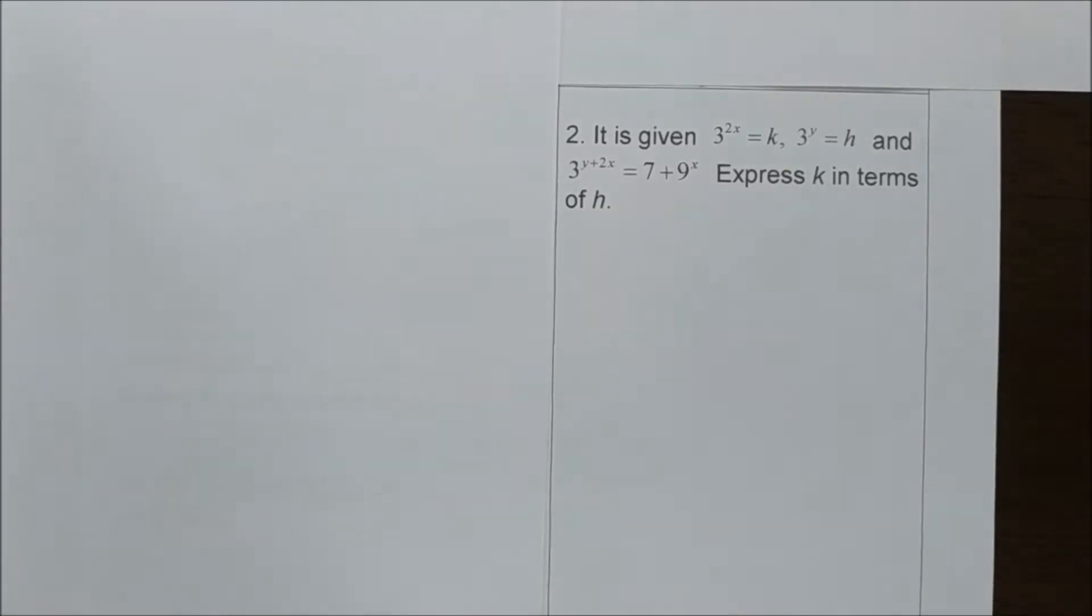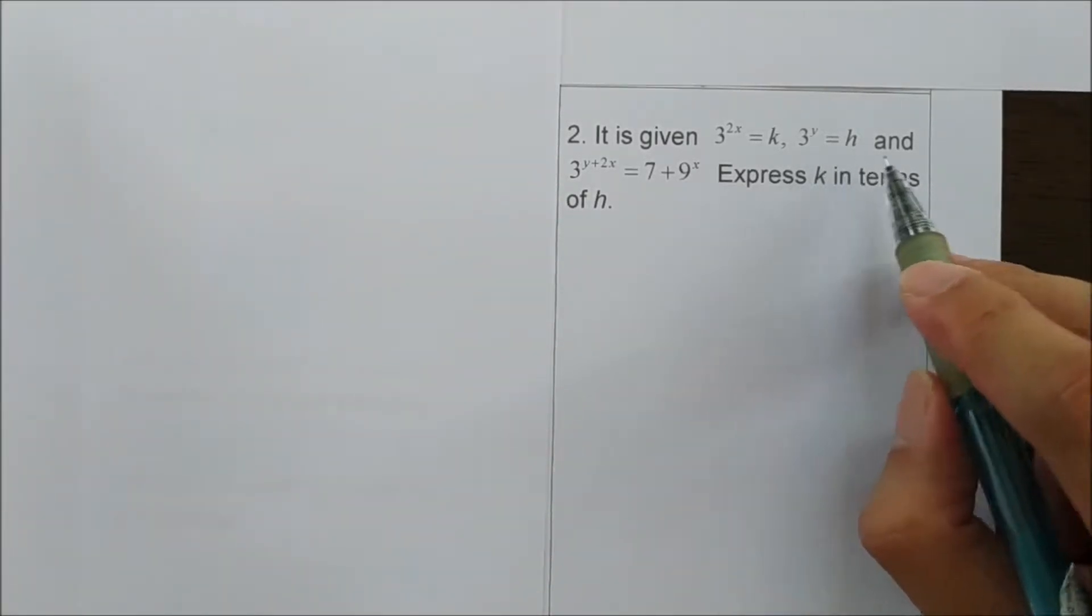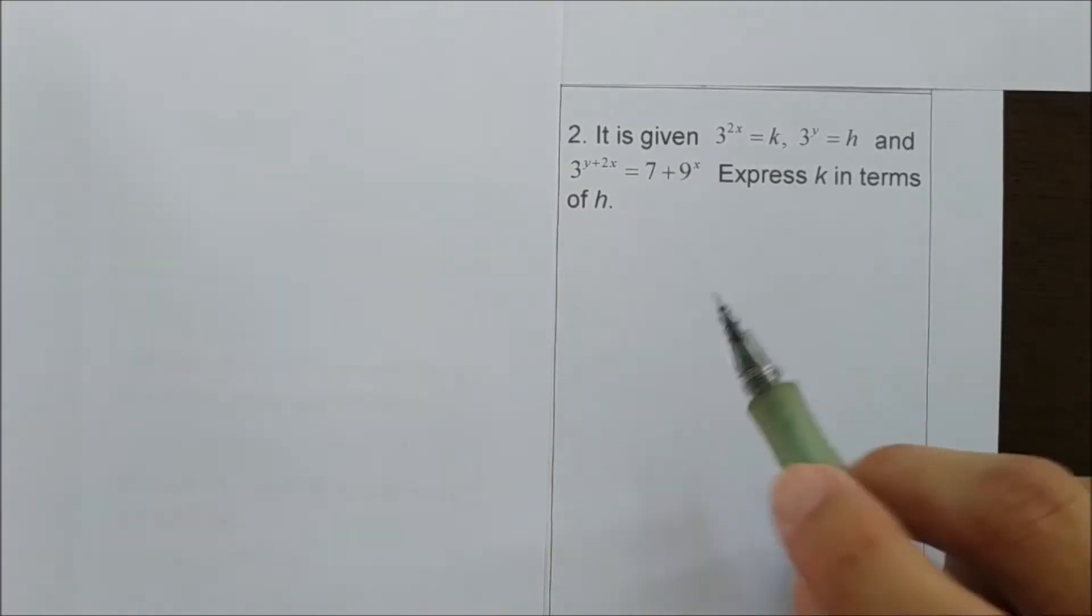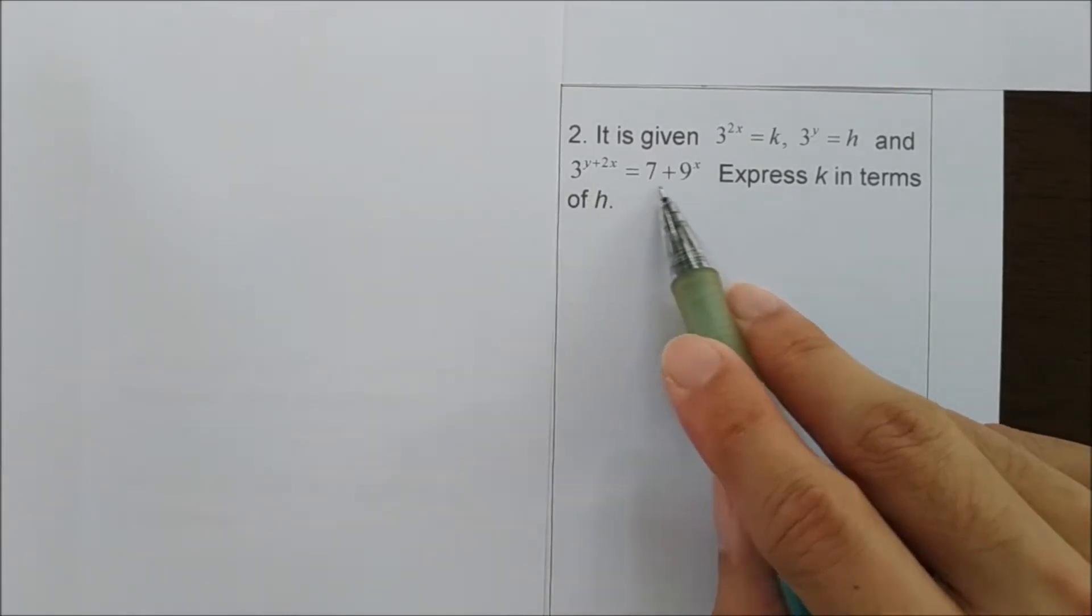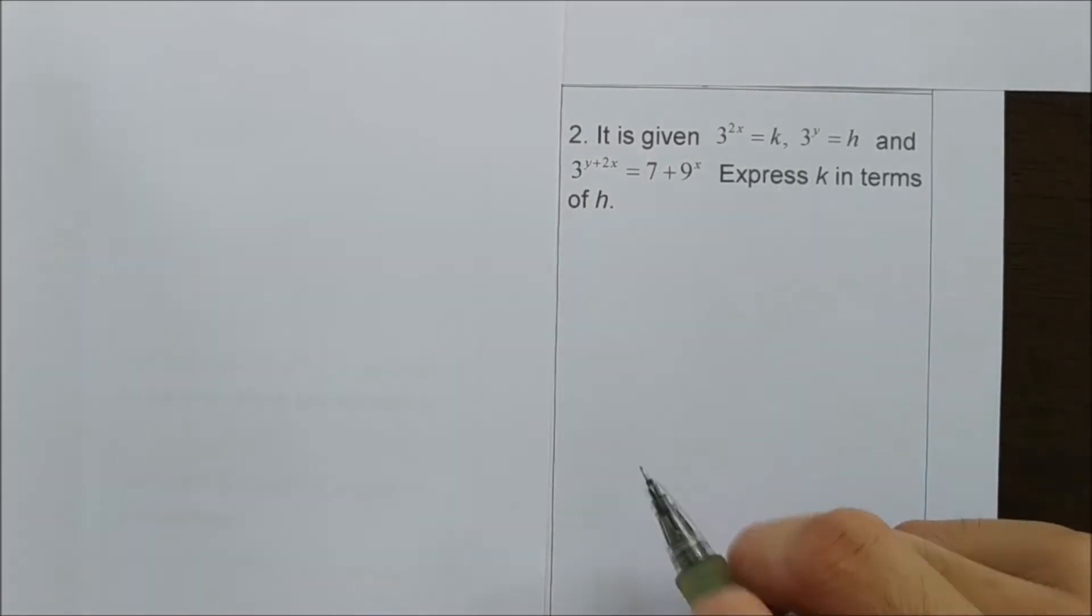Now look at question number 2. It is given that 3 to the power of 2x equals k, 3 to the power of y equals h, and given this equation. You will need to express k in terms of h. So it's very obvious that we need to change this equation by replacing the k and the h into this equation.